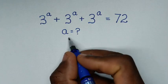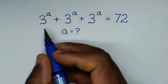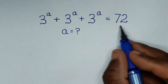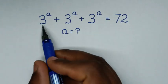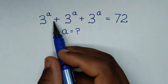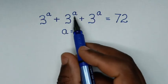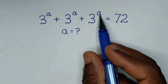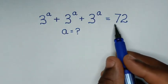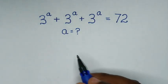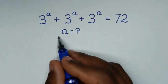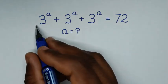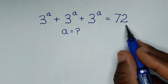Hello, you are welcome to solve this math problem which is 3^a plus 3^a plus 3^a is equal to 72, to find the value of a from this equation.